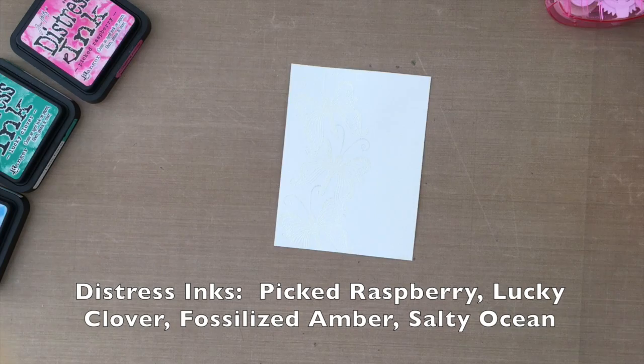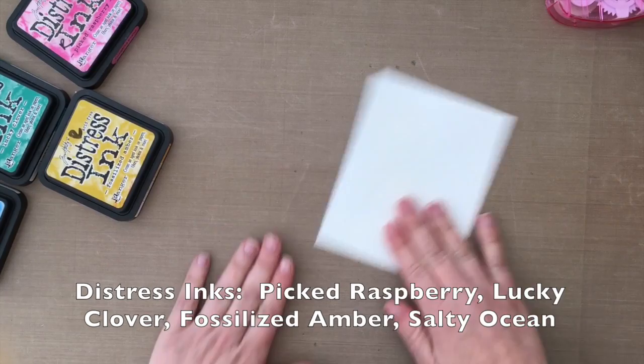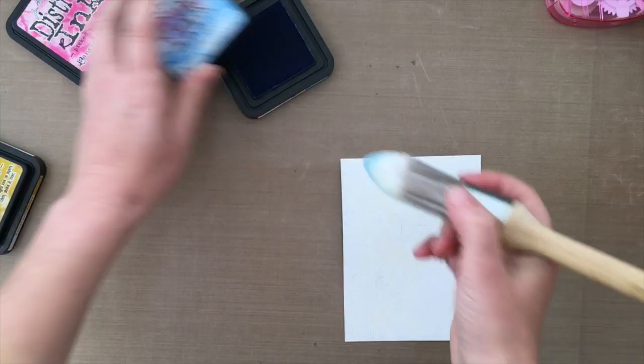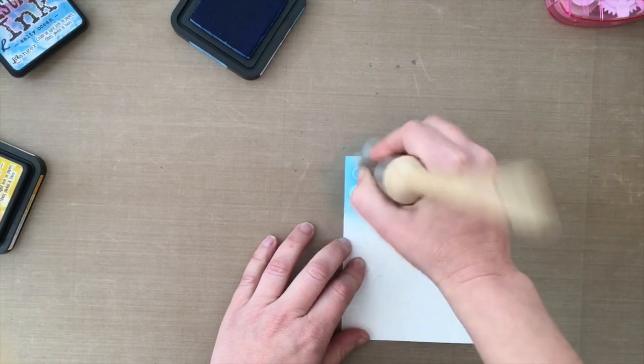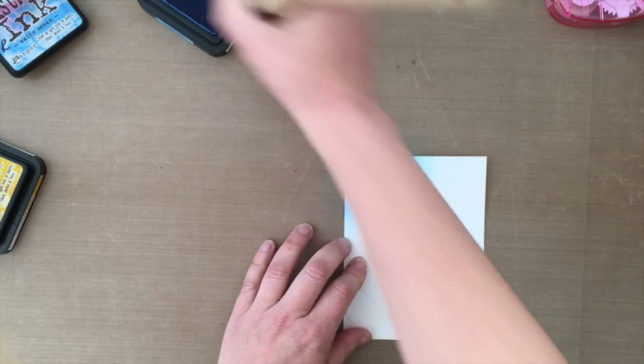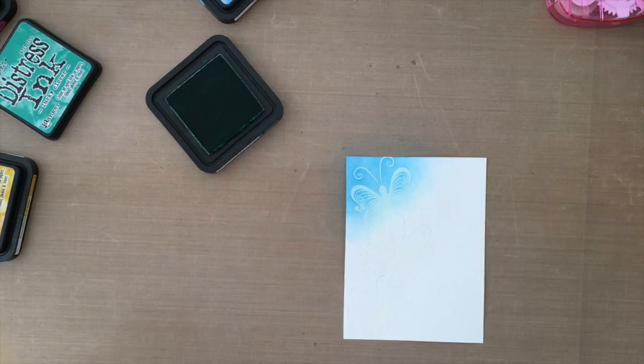I'm going to be using Distress Inks in Picked Raspberry, Lucky Clover, Fossilized Amber, and Salty Ocean, and I'm going to apply them with these Clarity Brushes. I love them. I held off on buying these for quite some time because they're pricey, about $25 to $26 for the pack of four, but I ended up getting them because I saw a couple people using them on YouTube. I have all the Ranger foam blending tools which are great too, but these seem to be a little bit easier for me. I don't have to work hard to not leave any harsh lines.